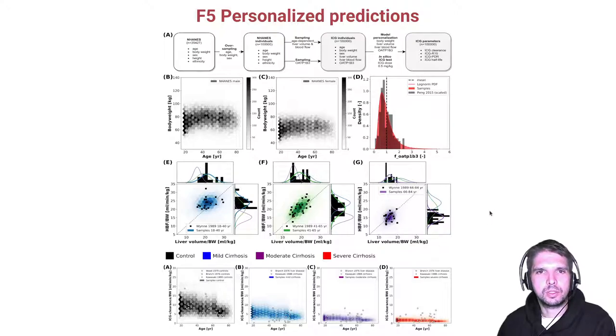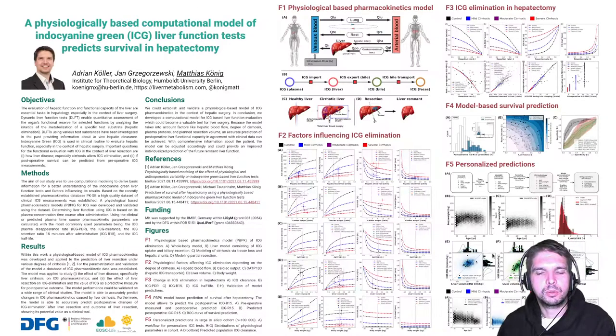Last but not least, we were interested in the intra-individual variability in ICG testing. To study that, we created a large in silico cohort of 100,000 subjects and then performed personalized ICG tests in this cohort. Again, our predicted model outcomes are in very good agreement with the observed variability for healthy subjects and various degrees of cirrhosis.